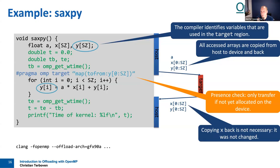The runtime maintains a mapping table (presence check) that tracks which variables are already on the device, which have been modified, and which need to be mapped back. There is a small overhead for this management. The recommendation is always to do mapping explicitly — for many codes this is actually required, as we will see.